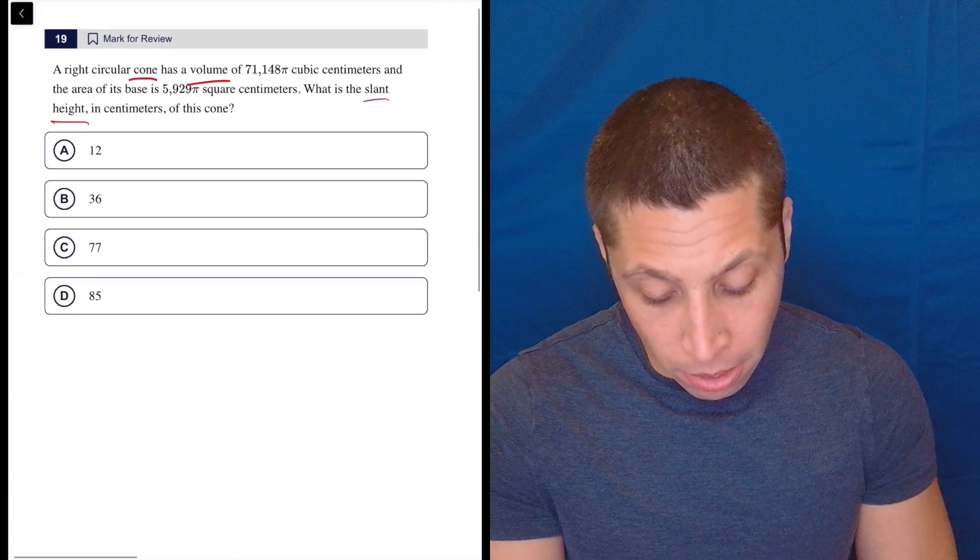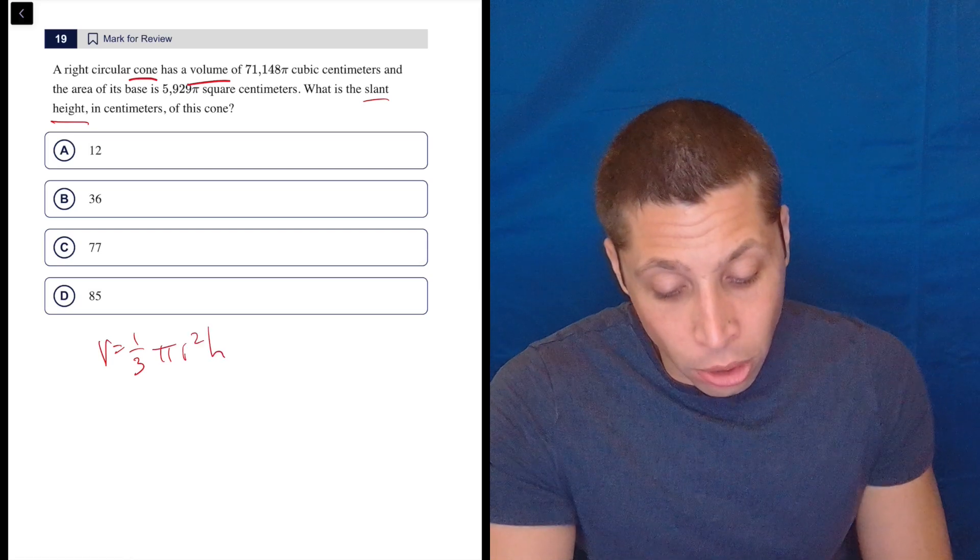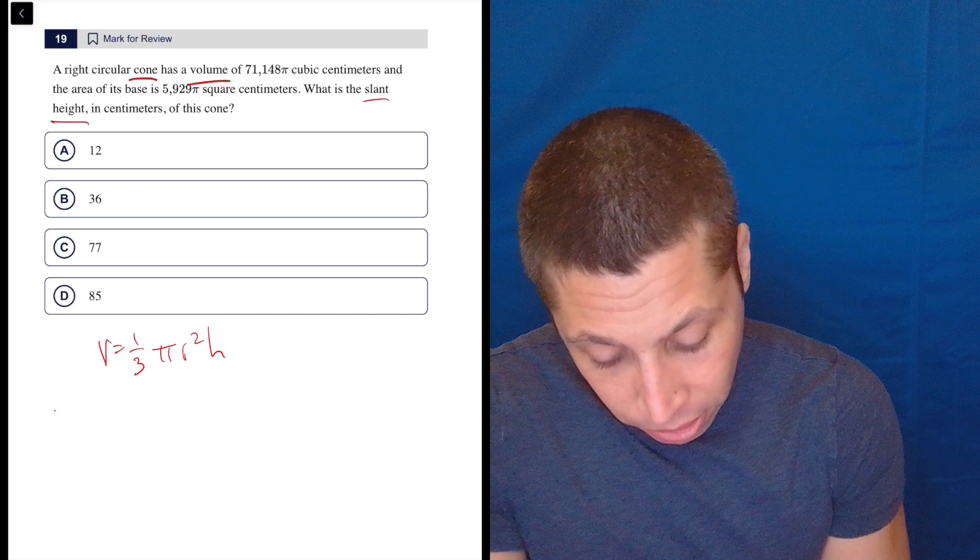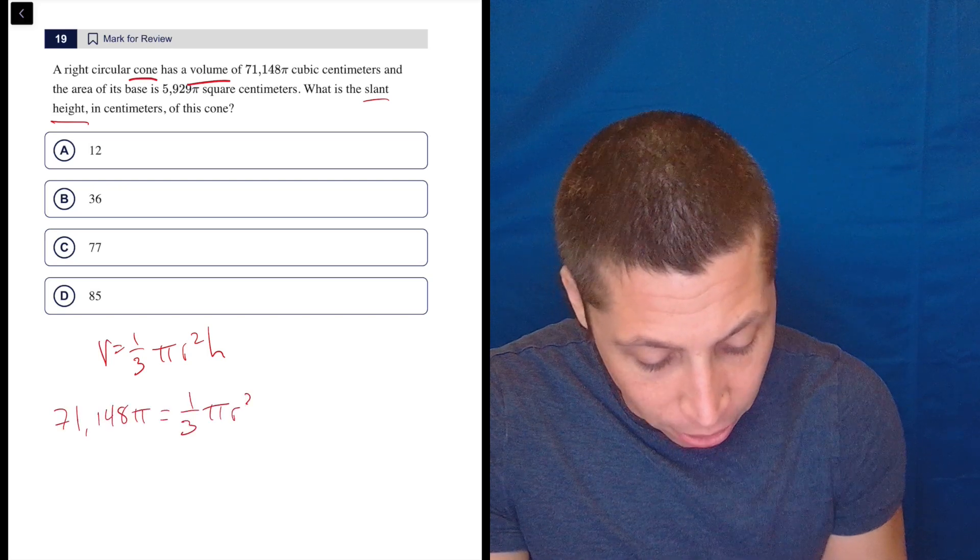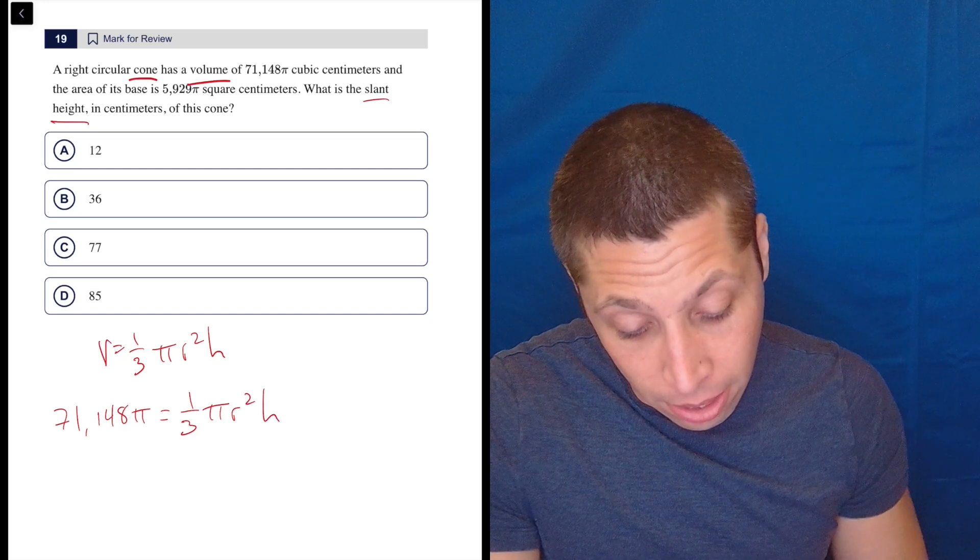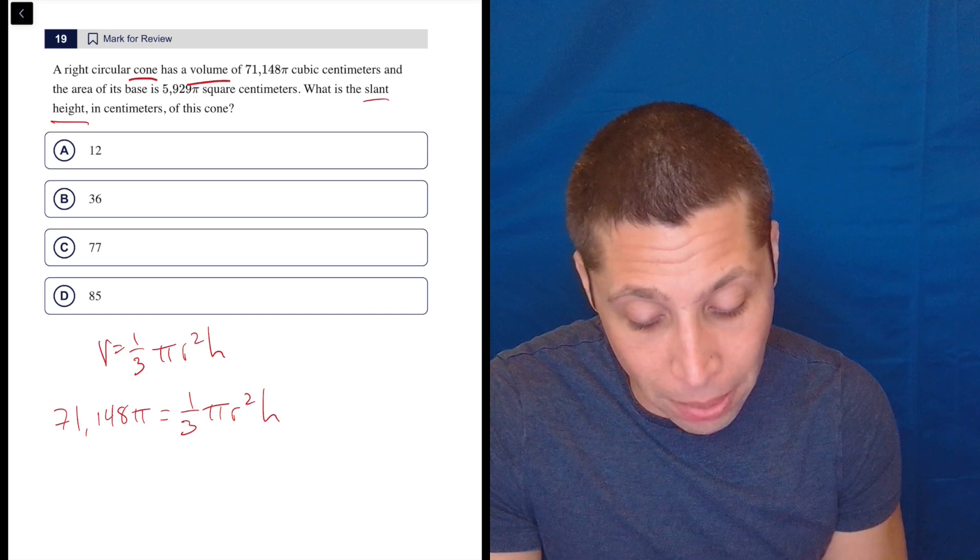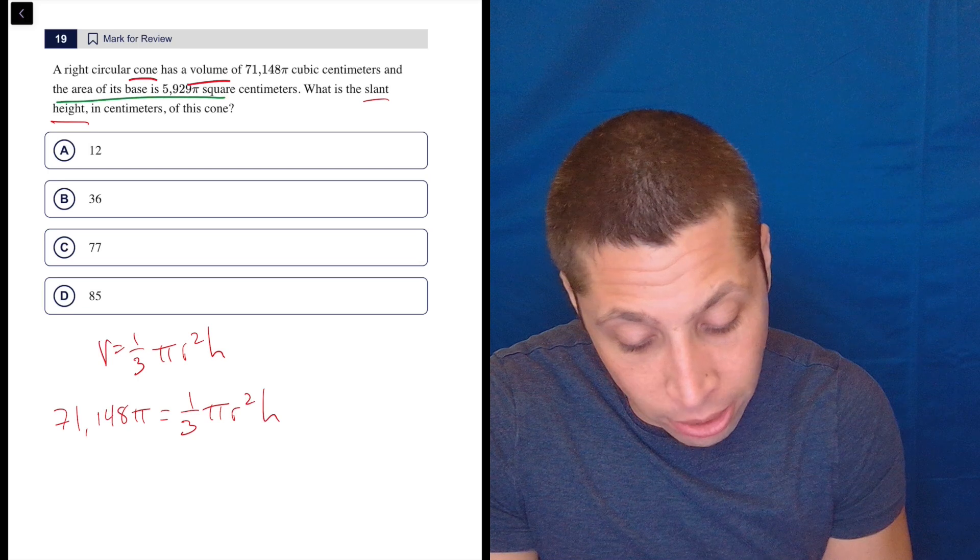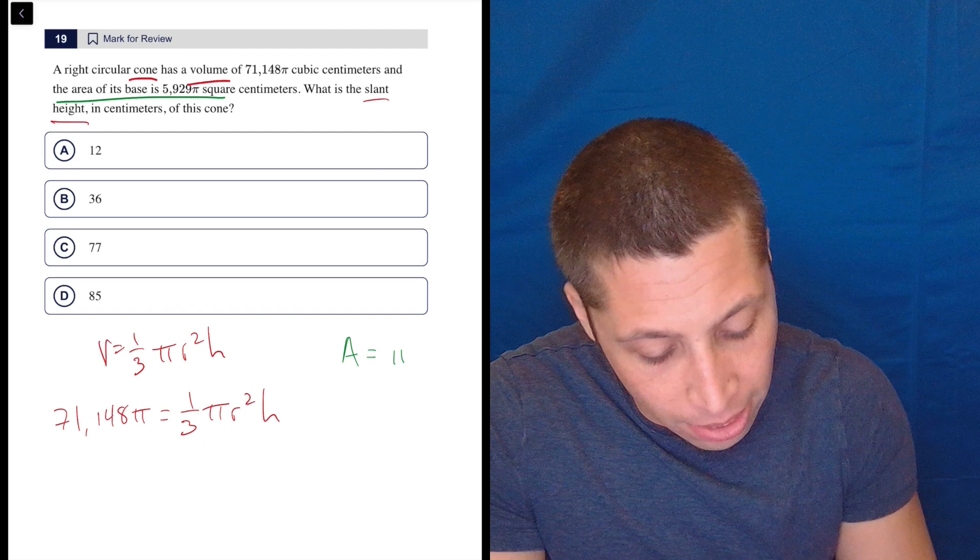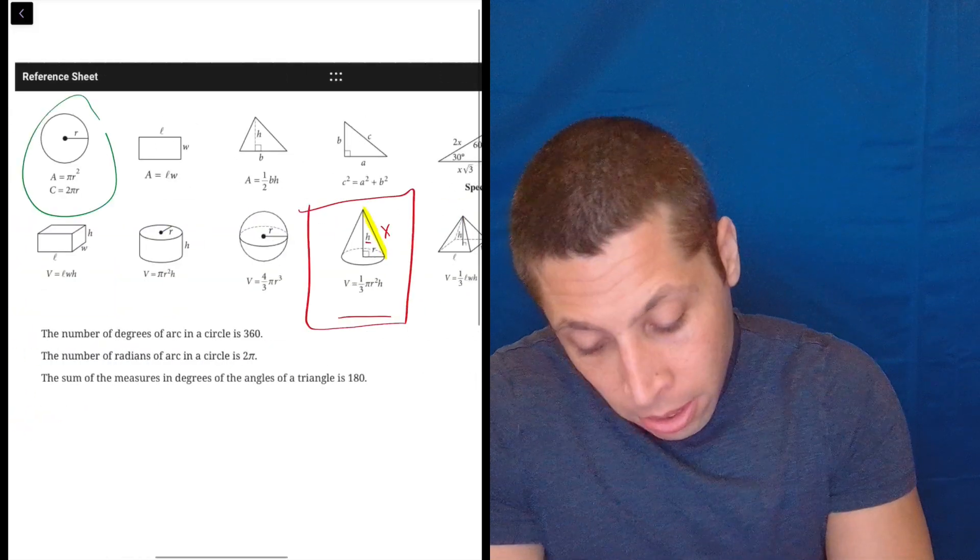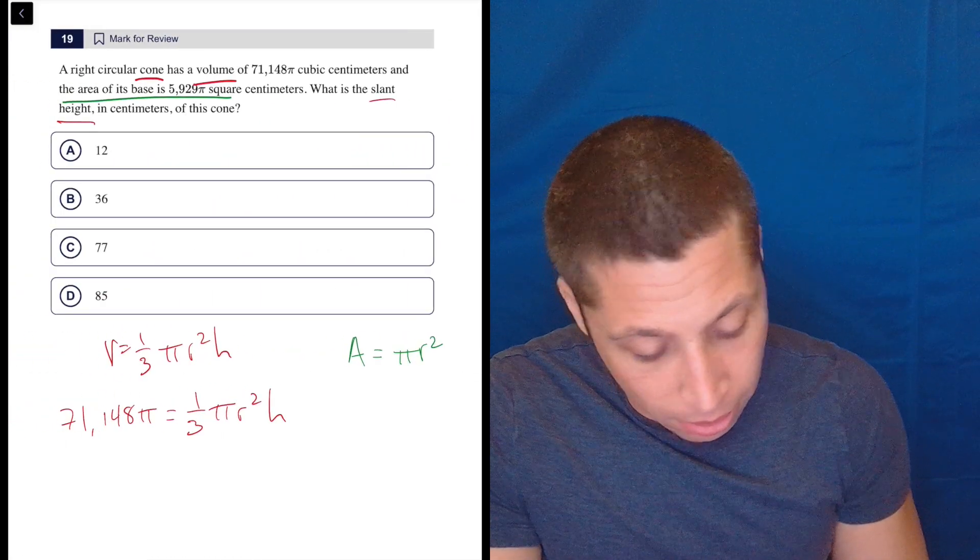So I'm going to bring the formula over. The volume is one third pi r squared h. So at first, I would just plug points into equations. I have the volume as 71,148 pi equals one third pi r squared h. So I need to find the radius here because eventually I want some heights, but I don't have either the radius or the height. But because I have the area of its base, I have a little bit of an advantage in getting the radius.